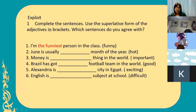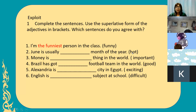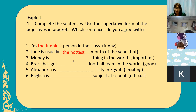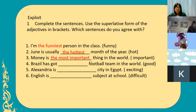So let's have this activity — complete the sentences using the superlative form of the adjectives in brackets. Number one: 'I'm the funniest person in the class' — adjective is 'funny', answer is 'the funniest'. Number two: 'June is usually the hottest month of the year' — adjective is 'hot'. Number three: 'Money is the most important thing in the world' — adjective is 'important', answer is 'the most important'. Very good, Bacon.